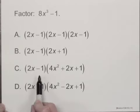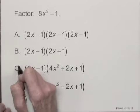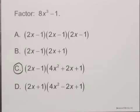We have (2x - 1)(4x² + 2x + 1). So choice C is correct.